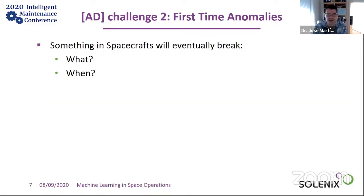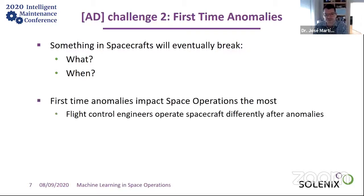Another challenge in space operations is that we face mostly first-time anomalies. Spacecraft are built with a lifetime of maybe three to five years, but satellites often continue operating for 10 or 15 years. We know something will break eventually, but not what, where, or when. First-time anomalies are the worst because nobody thought they were even possible. Once engineers understand an anomaly, they operate the satellite differently so it doesn't happen again — so we're always focused on first-time anomalies.